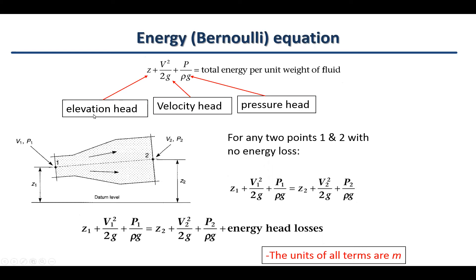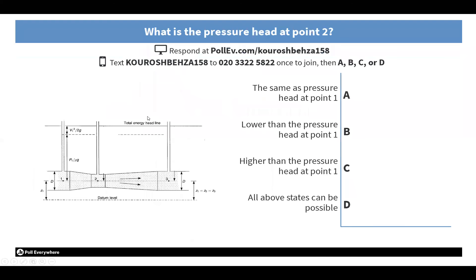The three terms are: first, the elevation head, denoted by z; second, the velocity head, denoted by v squared over 2g, where v is the velocity of the flow and g is the gravitational acceleration; and third, the pressure head, denoted by p over ρg, where p is pressure in newtons per square meter, ρ is density, and g is gravitational acceleration.